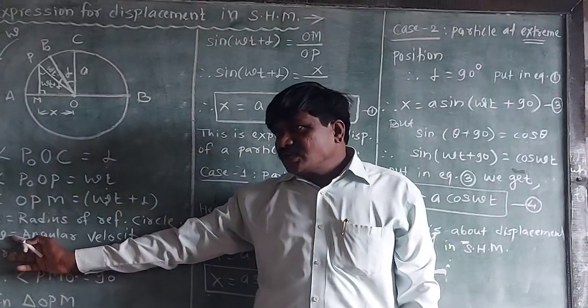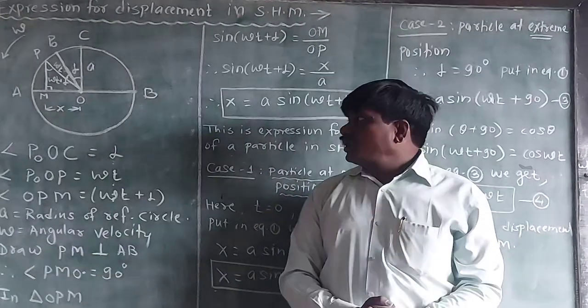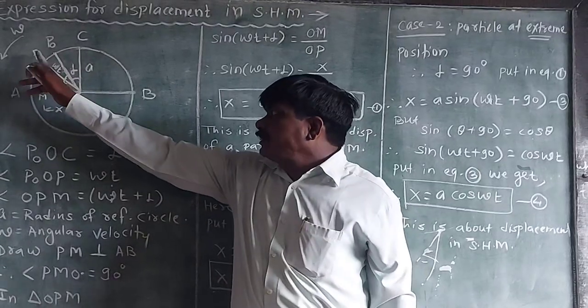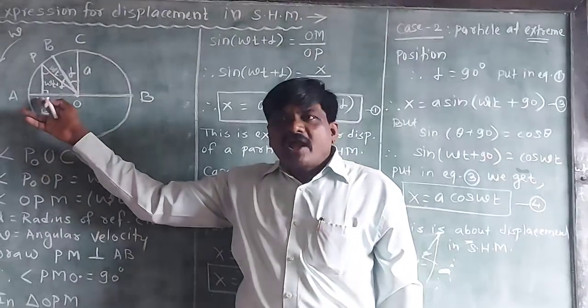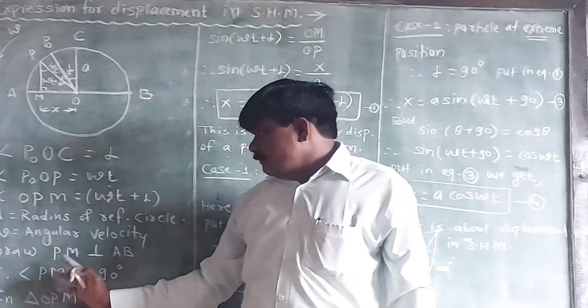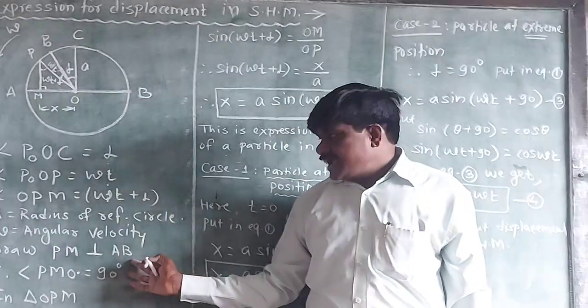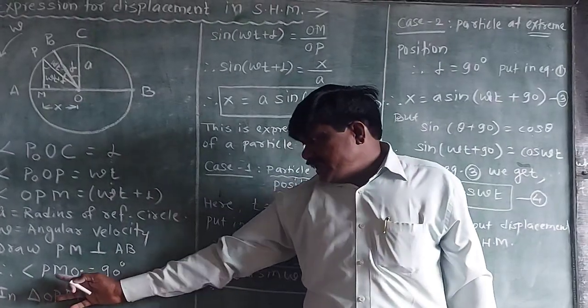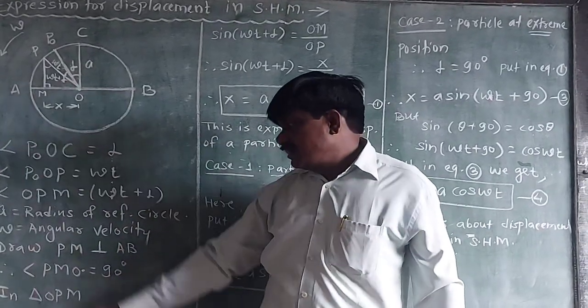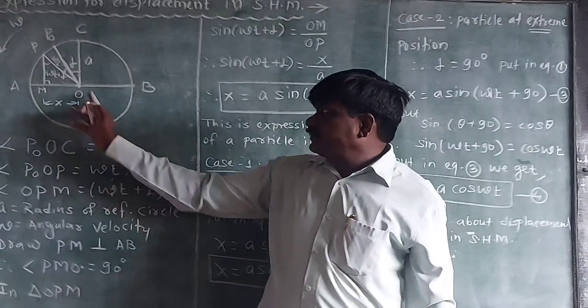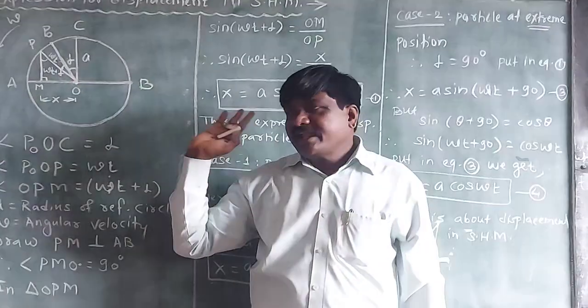Omega is the angular velocity. Draw the perpendicular from point P to the diameter AB. It meets at point M. So PM is perpendicular to AB. Angle PMO forms a right angle triangle. In triangle OPM, we have a right angle triangle.